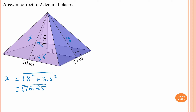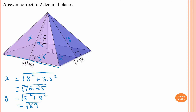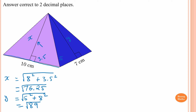Now label this side y. From here to here is 10, so this must be half of 10, which is 5 centimeters. So y² = 5² + 8², and the square root of that gives √89. I'll leave in exact form — it's easier. So we have x = √76.25 and y = √89.